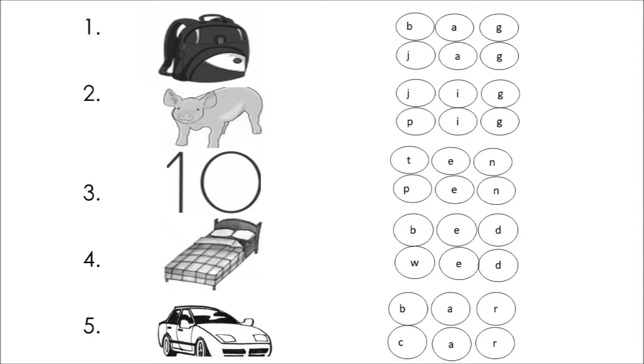Number three is ten. Spell ten. Choices are T-E-N and P-E-N. Number four is a bed. Spell bed. Choices are B-E-D and W-E-D. Number five is a car. Spell car. Choices are B-A-R and K-A-R.